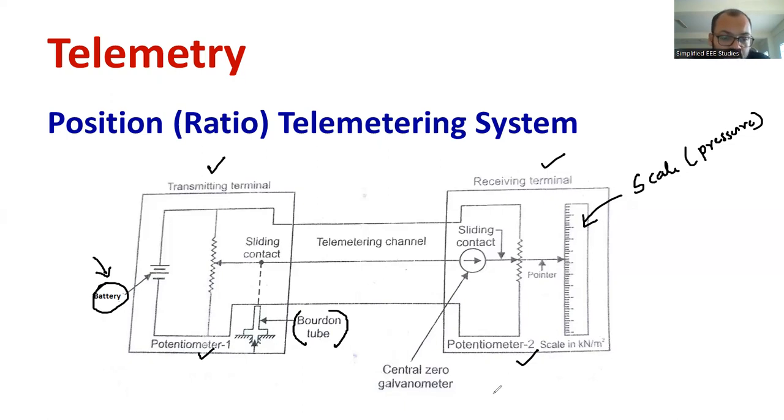Now, let us see with respect to changes in pressure. Here with respect to changes in pressure, the bourdon tube is getting activated. The bourdon tube is directly correlated with the slider, the sliding contact. So, with respect to variation in the pressure, definitely bourdon tube activates. Based on that, the slider is getting varied, getting changed.